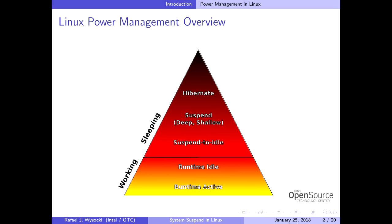This diagram is a high-level overview of Linux power management for any system based on the Linux kernel — desktop Linux, Android, Chrome OS, or similar. Such a system may be either sleeping or working. If it is sleeping, it is in one of the global system-wide low-power states, referred to as sleep states. The kernel can support up to four sleep states at the same time, and three of them are referred to as suspend states.